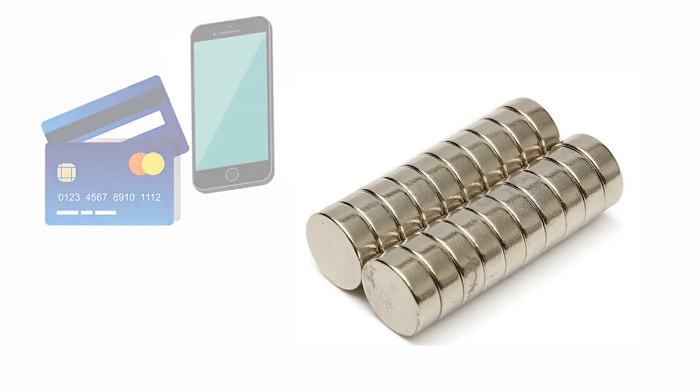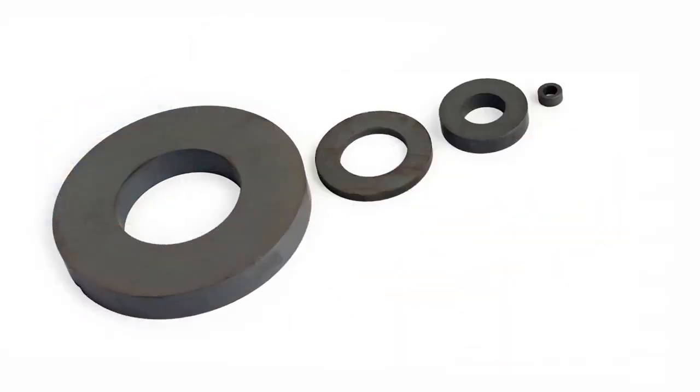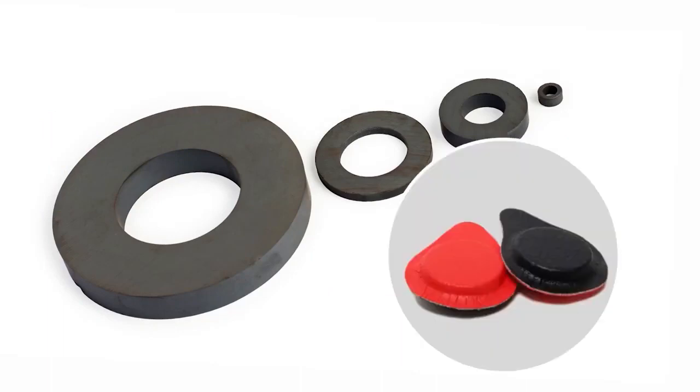Ferrite magnets, because they have less power, tend to be larger and can break more easily. So it is customary to cover them with some material such as leather or synthetic vinyl.